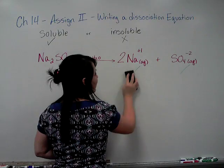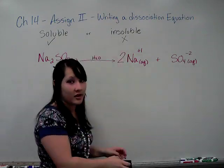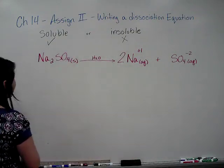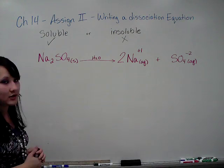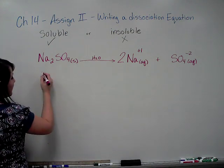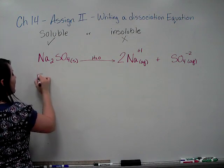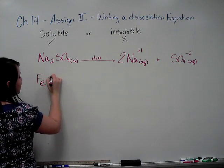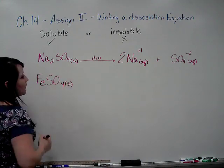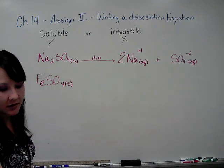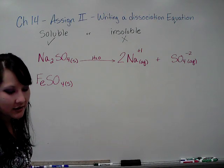What if you have a substance that is insoluble? Insoluble substances you cannot write a dissociation equation. For example, iron 2-sulfate is going to be an insoluble substance. Iron 2-sulfate is insoluble.